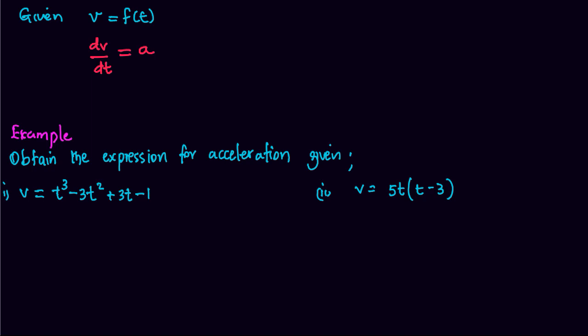Let's look at an example. Given v equals t cubed minus 3t squared plus 3t minus 1, we need to obtain the expression for acceleration. From above, differentiating velocity with respect to time, dv over dt, is equal to acceleration, which will be equal to 3t squared minus 6t plus 3. So the expression for acceleration a is 3t squared minus 6t plus 3.